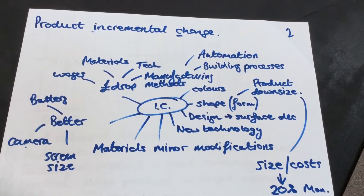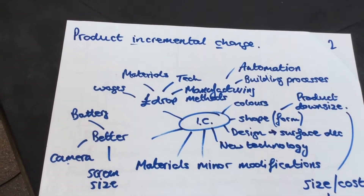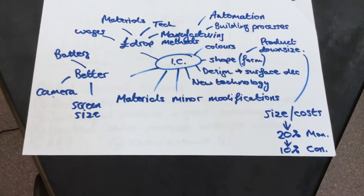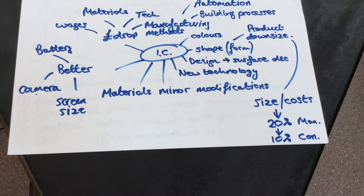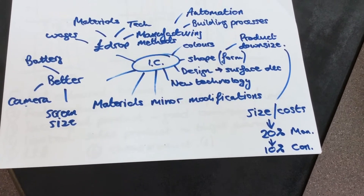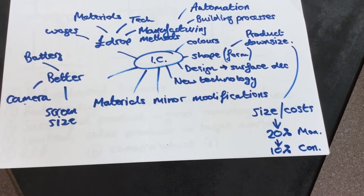Welcome to part two. This one is about product incremental change and all the changes that manufacturers go through to invigorate their sales.